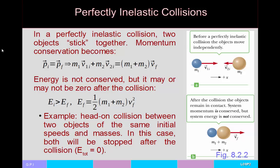In a perfectly inelastic collision, momentum conservation says initial momentum equals final momentum: m₁v₁ᵢ + m₂v₂ᵢ = (m₁ + m₂)v_f. Energy is not going to be conserved, and depending on the parameters you may end up with mechanical energy of zero afterwards — that's when two objects collide and both are stopped.